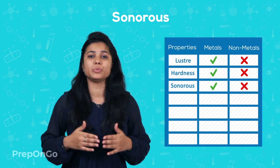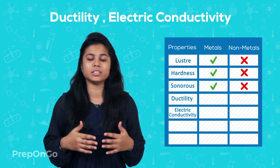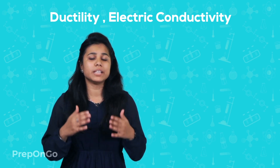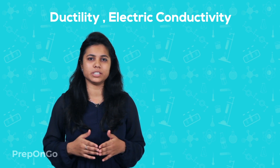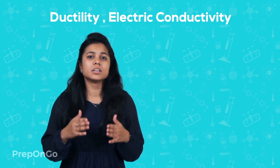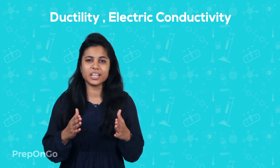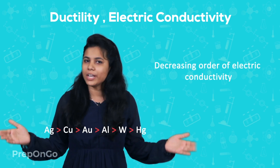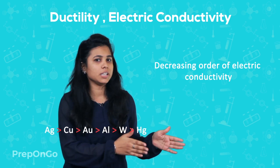As we have seen, metals are also used in electric wires. There are two reasons why we use metals — specifically copper — in making electric wires. Firstly, metals are ductile, meaning they can be drawn into thin wires. Secondly, they are good conductors of electricity, allowing the flow of electricity through them. Gold is the most ductile whereas silver is the best conductor of electricity, but we rarely use silver because it is expensive. Instead, we use copper and aluminium. The decreasing order of electrical conductivity goes from silver as the most conductive to mercury as the least conductive.